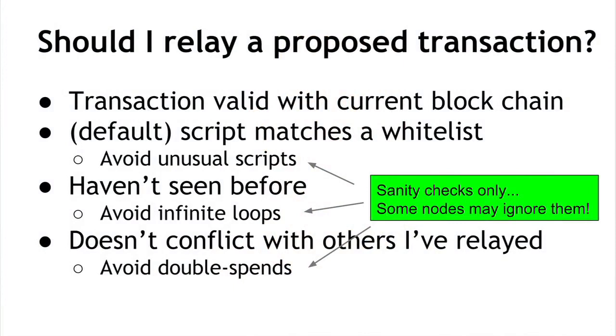All of these propagation checks are just sanity checks. Well-behaved nodes implement them to keep the network healthy and running properly. But since it's a peer-to-peer network and anyone can join, there's always the possibility of a node not following the exact protocol — forwarding double spends, forwarding non-standard transactions, or forwarding invalid transactions. That's why it's important that every node do its own checking independently.